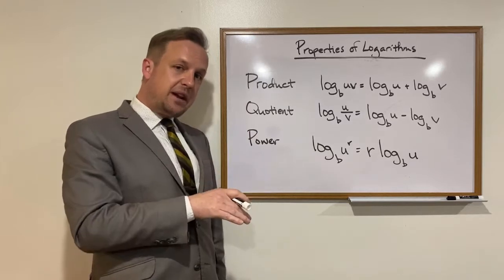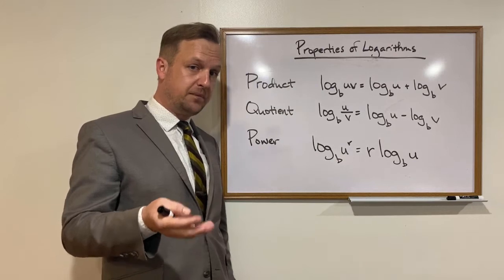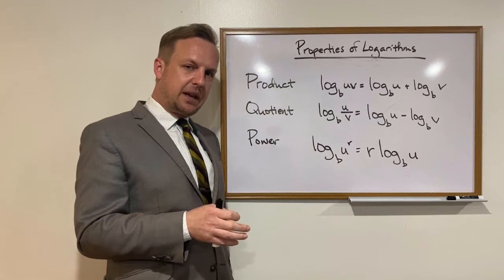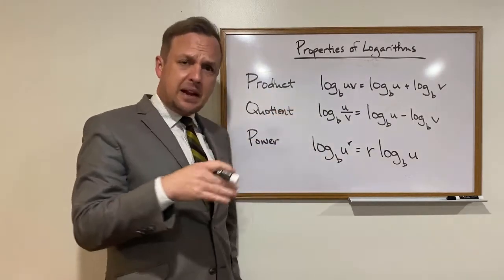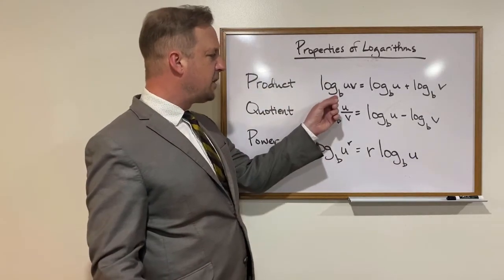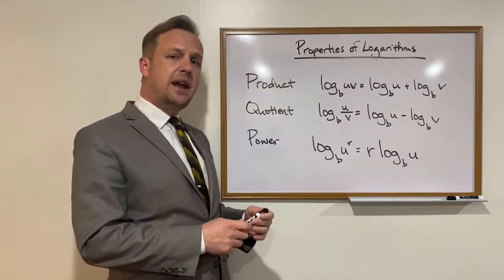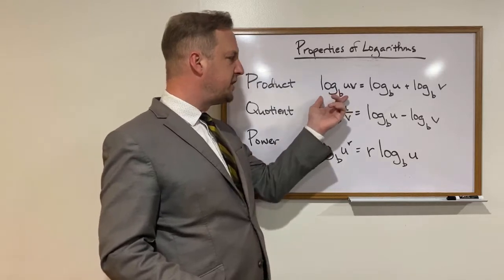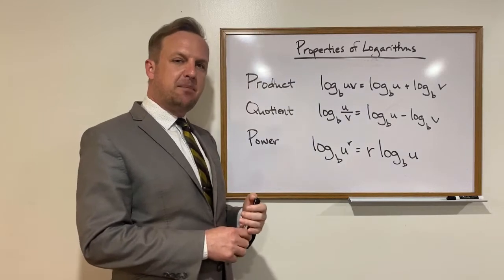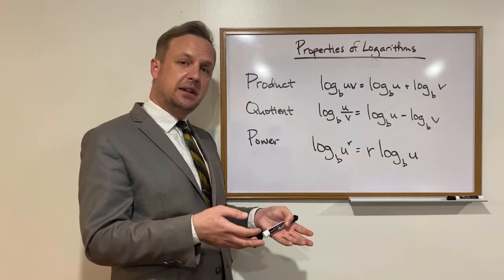You're going to see that these take very similar forms here. So we're going to go over quickly what each one is, and then I'm going to show you some application examples. We're going to look at four total today. The first one is the product rule. Basically, if we're taking the log base b of two factors, which we'll call u and v, then we can essentially split those two factors up and add them together as separate logs.